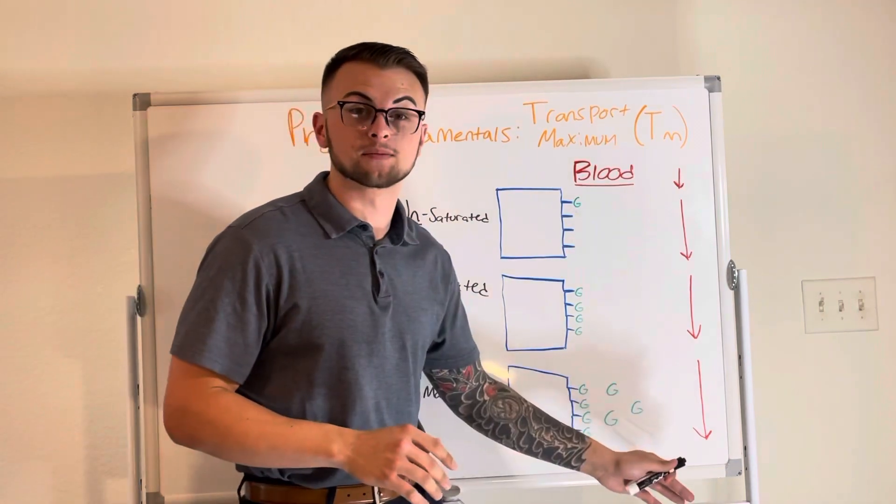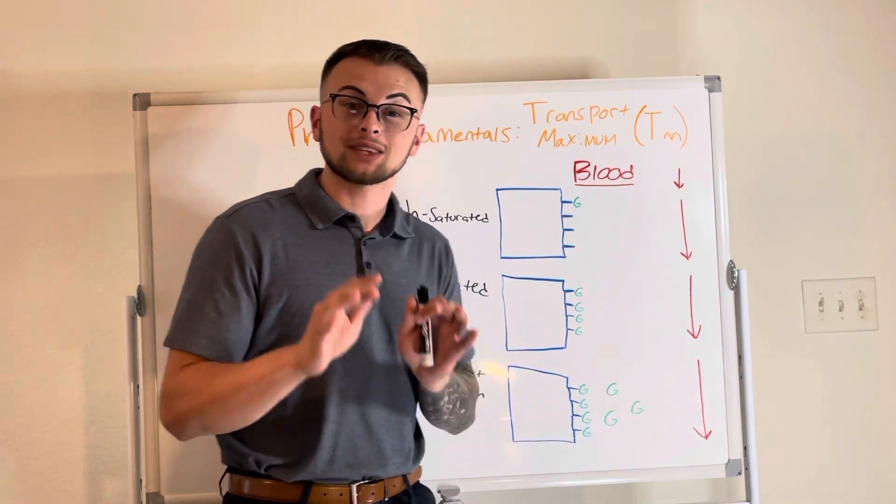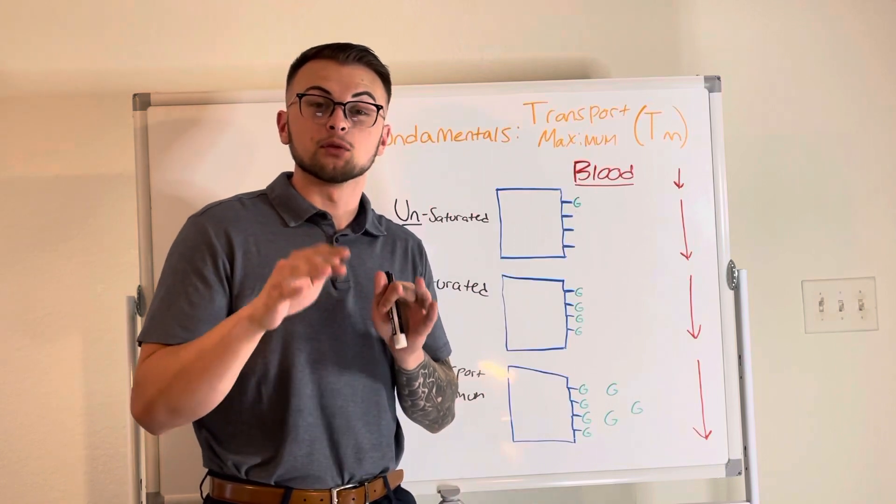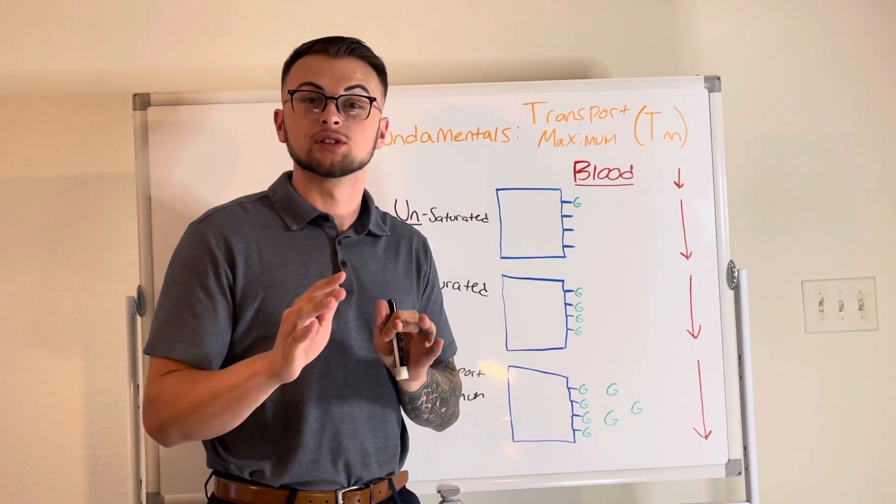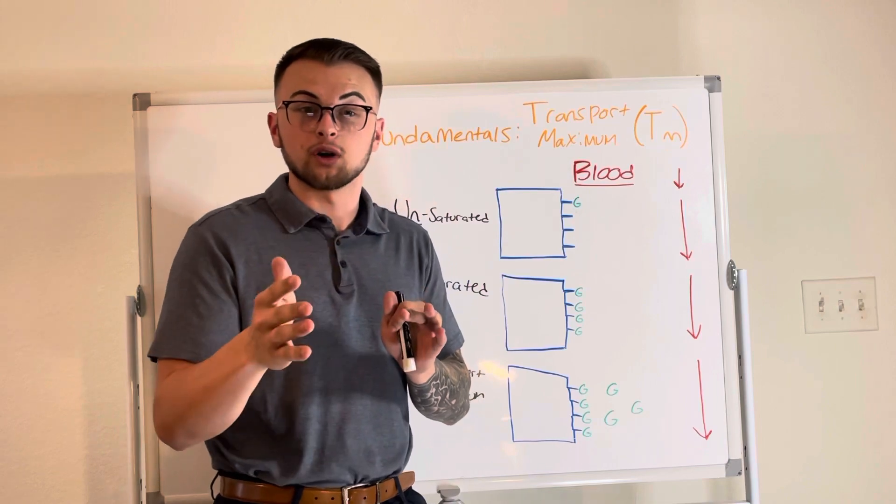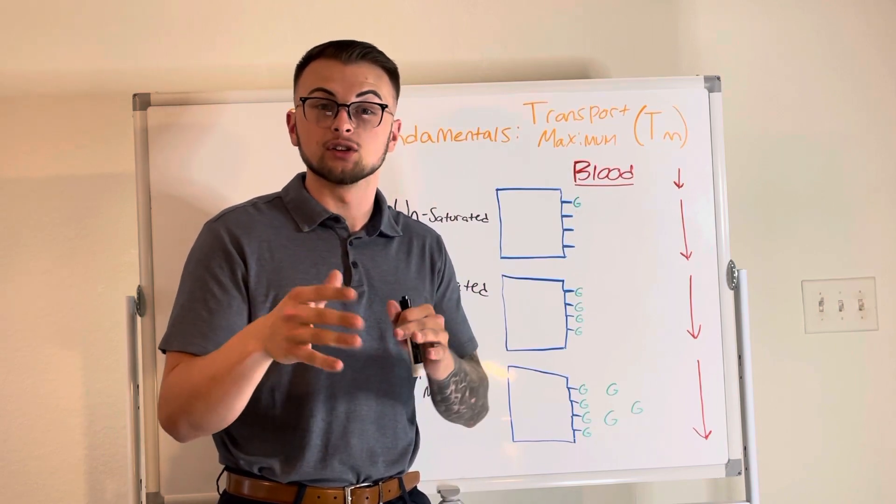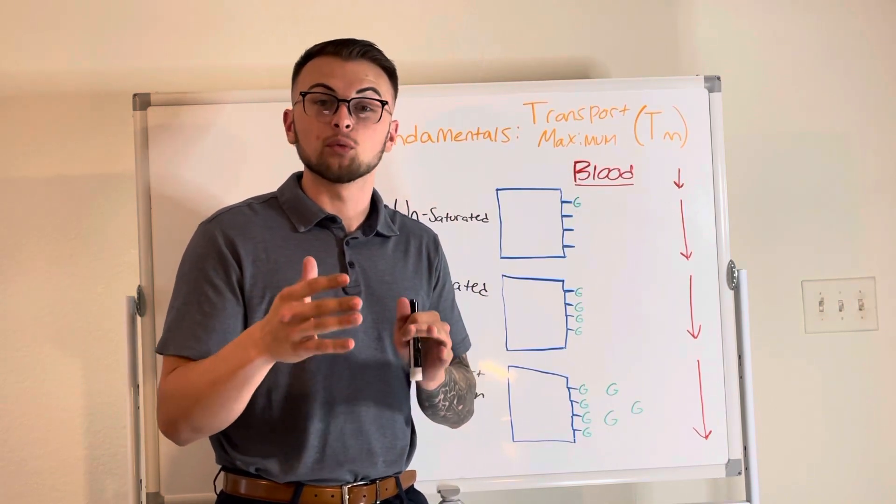Clinically, it is important to know that if your patient has a blood glucose of anywhere from about 180 to 250 milligrams per deciliter, depending on the person, they will reach their transport maximum.